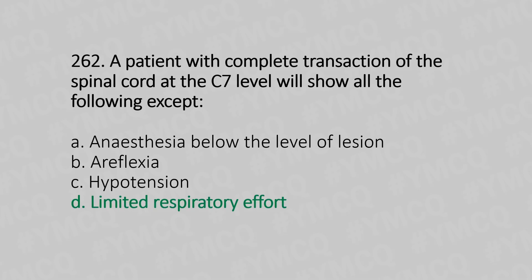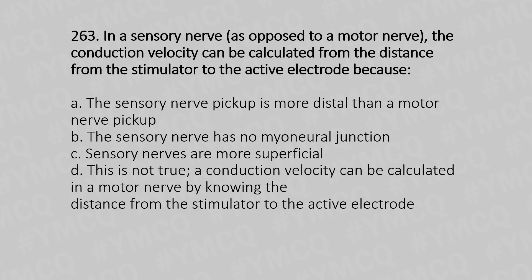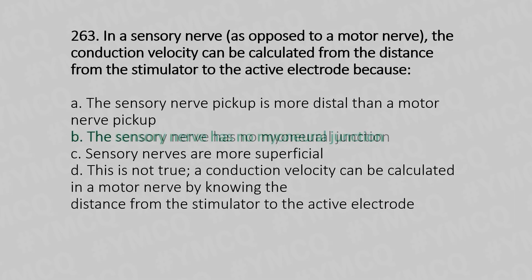Now let's move to question number 263. In a sensory nerve, the conduction velocity can be calculated from the distance from the stimulator to the active electrode because: Option A, the sensory nerve pickup is more distal than a motor nerve pickup; Option B, the sensory nerve has no myoneural junction; Option C, sensory nerves are more superficial; Option D, this is not true, as conduction velocity can be calculated in a motor nerve by knowing the distance from the stimulator to the active electrode. And the answer is Option B, the sensory nerve has no myoneural junction.